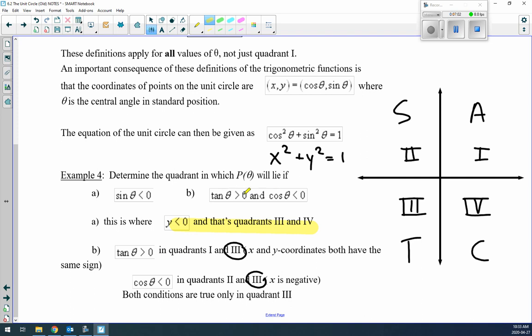Next part: tan is greater than zero (where's tan positive?) and cosine is less than zero (where's cosine negative?). Tan is positive in quadrants 1 and 3. Cosine is negative in 2 and 3. What's common to both? Three is common. So for both conditions to be true, it has to be lying in quadrant 3.